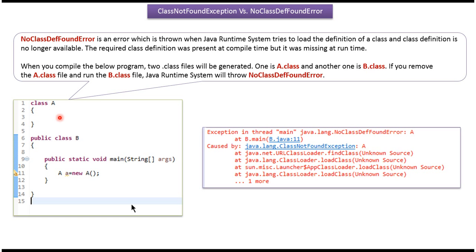If we compile this program, two class files will be created: the first one is A.class and the second one is B.class. If we remove A.class and run B.class, then the Java runtime system will throw NoClassDefFoundError.